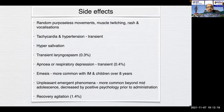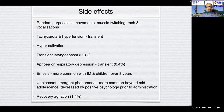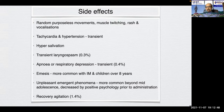Side effects of ketamine include random purposeless movements, muscle twitching, rash, and vocalizations. Tachycardia and hypertension can be transient. Hypersalivation is quite frequent with repeat doses. Transient laryngospasm and apnea or respiratory depression can occur. Emesis is more common with intramuscular route and in children over 8 years of age. Unpleasant emergence phenomena are more common beyond mid-adolescence and decreased by positive psychology prior to administration. Recovery agitation can be seen in 1.4% of cases.